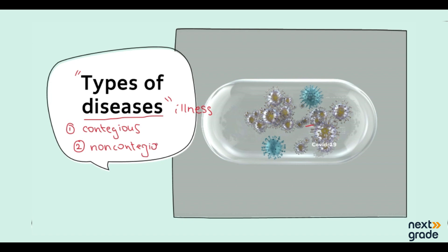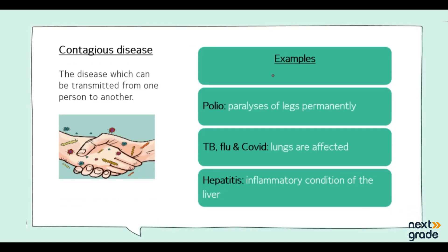We are going to learn about them in detail and look at examples of these diseases as well. A contagious disease is one which can be transmitted from one person to another — a disease that transfers from one person to another is called a contagious disease.